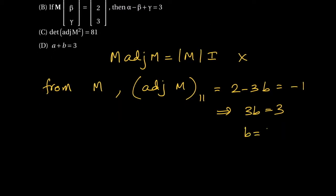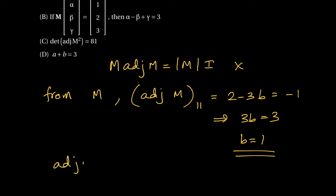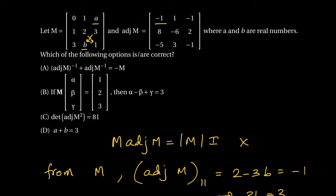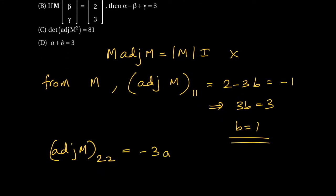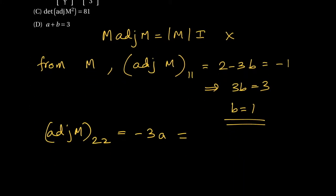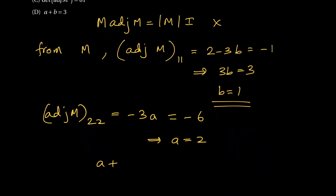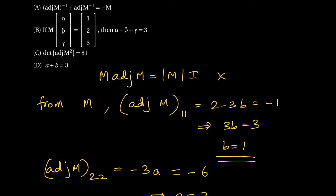Now I'll find the (2,2) element of adjoint of M, which turns out to be minus 3a. Since minus 3a is given as minus 6, we get a equals 2. So a plus b equals 3, which is a correct answer — Option D is correct.